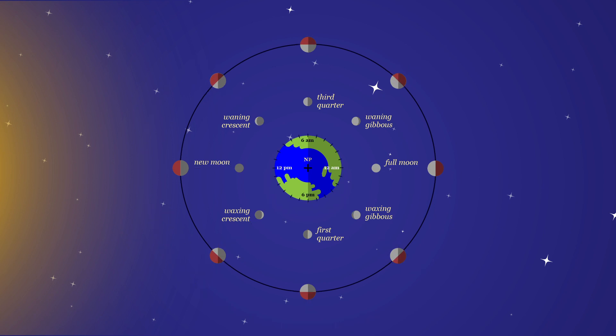Note that the direction of the sun allows one to specify time zones on Earth. We have noon towards the sun, midnight on the far side of Earth, and the direction of rotation allows us to add 6 p.m. and 6 a.m.